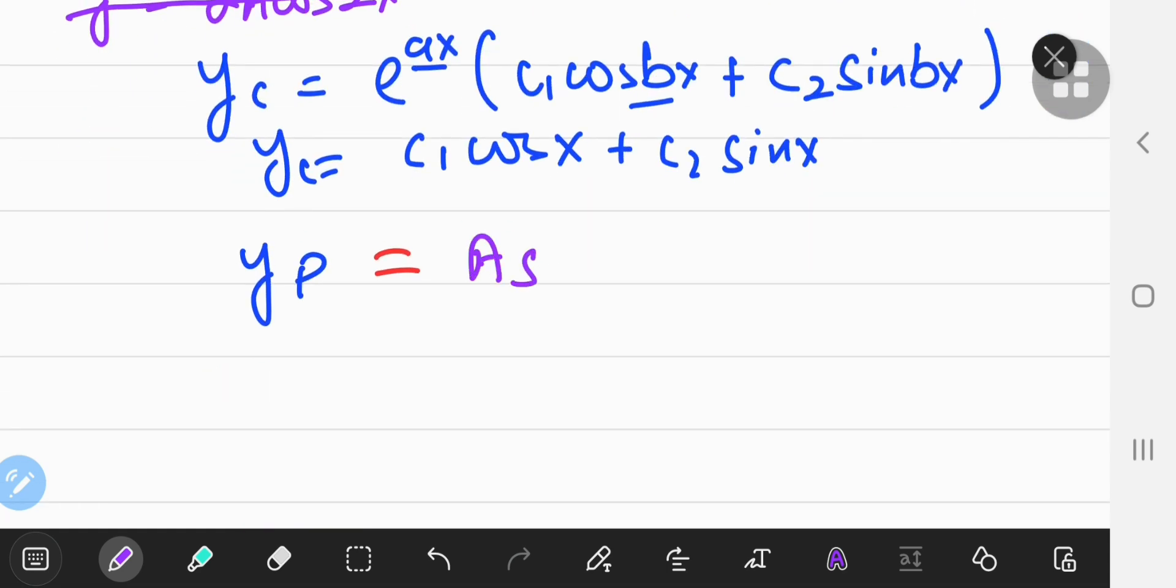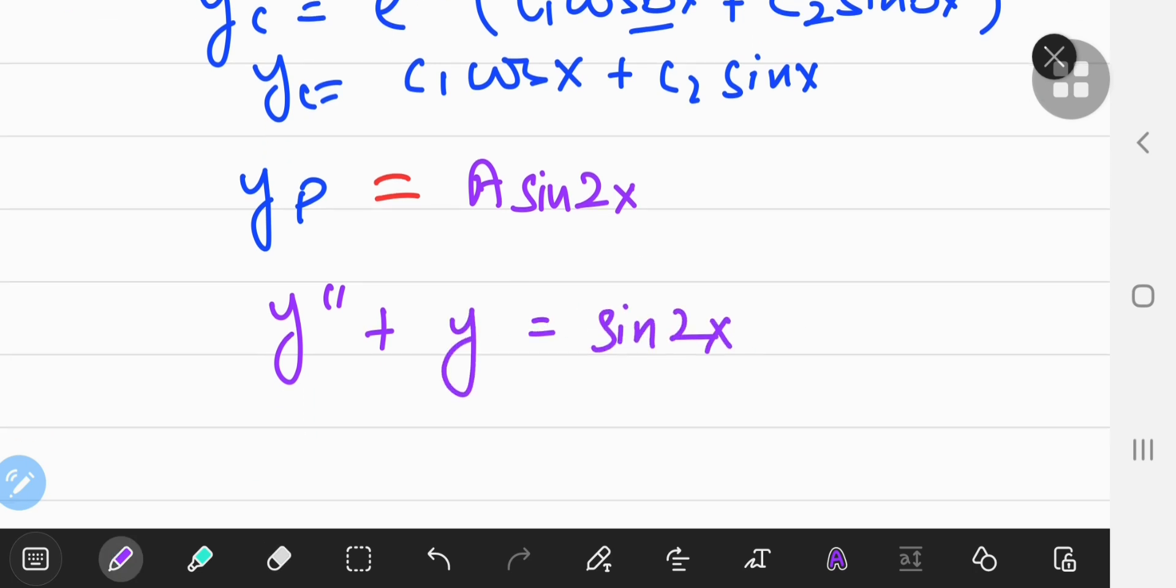Let me just solve it using this structure for the particular solution. So y sub p equals a times the sine of 2x and the differential equation was y double prime plus y equal to sine 2x. The second derivative was negative 4a times the sine of 2x and the function is just a times sine 2x.